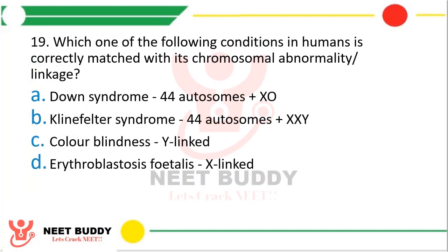Question 19. Which one of the following conditions in humans is correctly matched with its chromosomal abnormality? Down syndrome: 44 autosomes plus XO; Klinefelter syndrome: 44 autosomes plus XXY; Color blindness: Y-linked; Erythroblastosis fetalis: X-linked. The correct answer is option B — Klinefelter syndrome: 44 autosomes plus XXY.